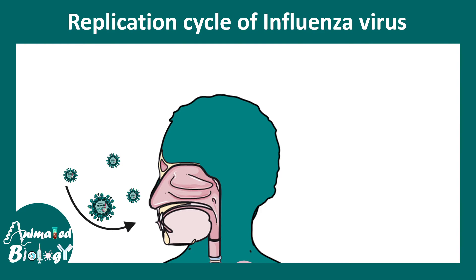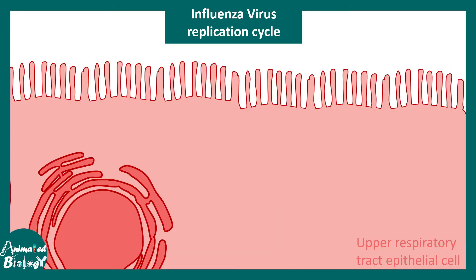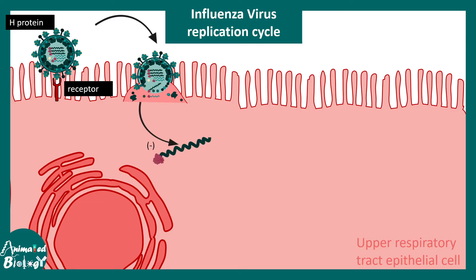Since influenza is an upper respiratory tract disease, it is generally transmitted through droplets and affects the respiratory epithelial cells. These cells have sialic acid receptors on top of them which the virus uses to get into the cells. The hemagglutinin protein, or H protein, binds to the receptor, allowing the viral envelope to fuse with the cellular membrane, releasing all the genetic content of the virus into the cytoplasm.